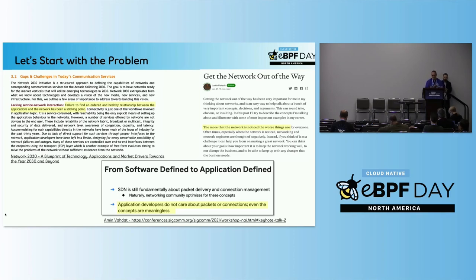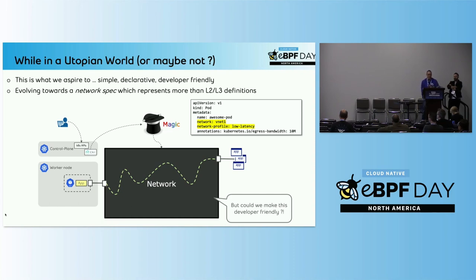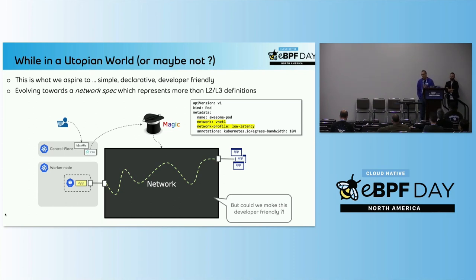And the concept of what a network is for them is kind of overly complex for no reason. I really like this talk, because in a utopian world, we would like to have a simple declarative and developer-friendly way to do application networking — evolving towards a network specification or a way to expose networking concepts in a meaningful manner for developers, not really how to do layer 2 or layer 3 constructs. Basically, what we want is an application developer to be able to express specifications, some magic will happen in the network, and how do we make that developer-friendly?